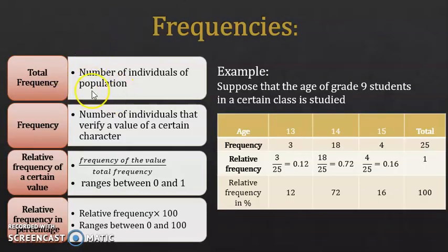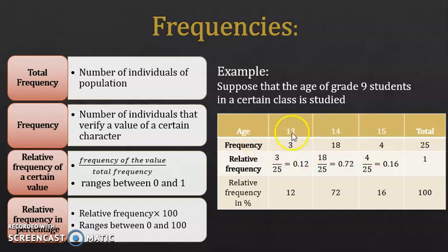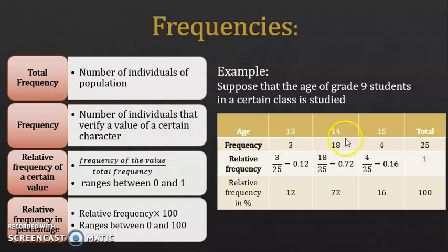Now, let's define frequencies. Suppose we are studying the age of grade 9 students in a class and we got these results: students are either 13, 14, or 15 years old. We noticed that 3 students are 13, 18 are 14, and 4 are 15. These numbers represent the frequency. So the frequency of 13 is 3, and the frequency of 14 is 18. The frequency is defined as the number of individuals that verify a value of a certain character.